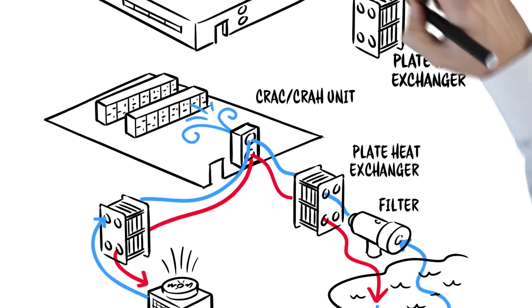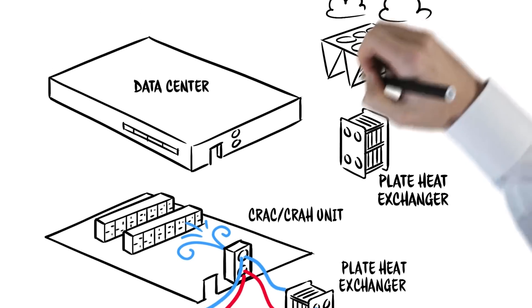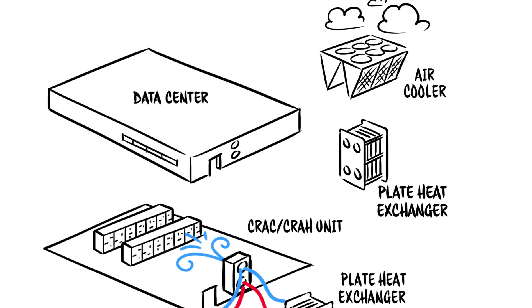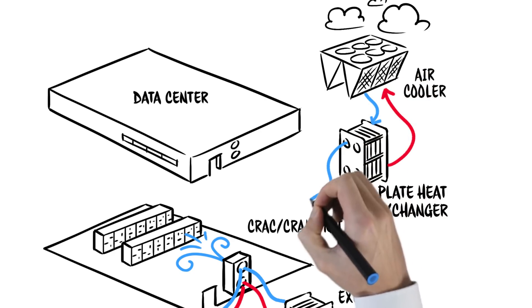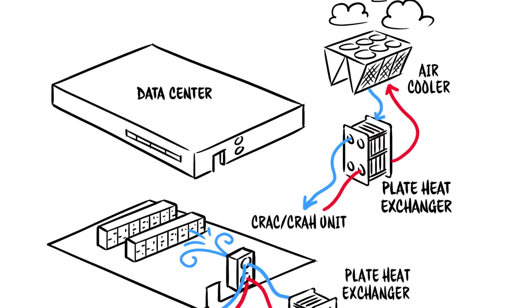Similarly, you can also design a system that makes it possible to achieve efficient free cooling with air. This can be enabled through heat exchangers which bypass the chiller when the outside temperature is favorably low.